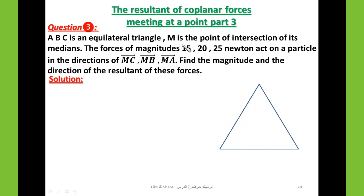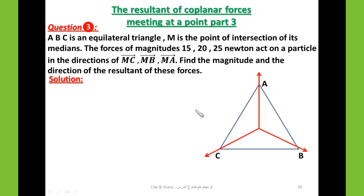M is the midpoint — the intersection point of the medians of triangle ABC. The forces of magnitudes 15, 20 and 25 newtons act on a particle in the directions of MC, MB and MA respectively.